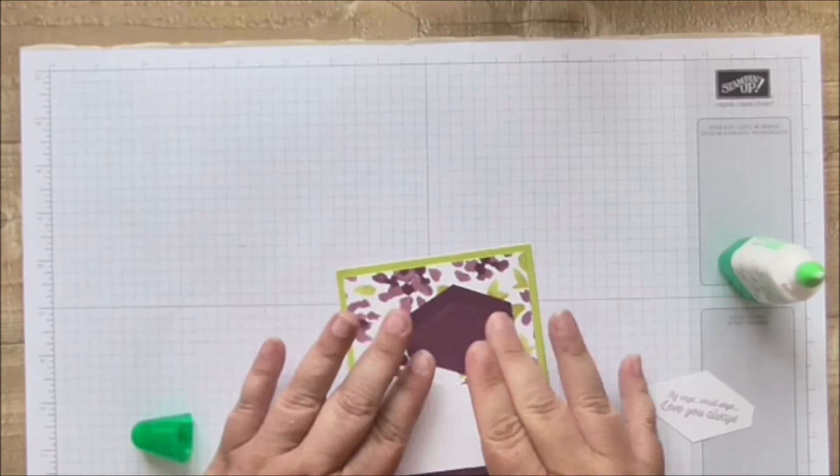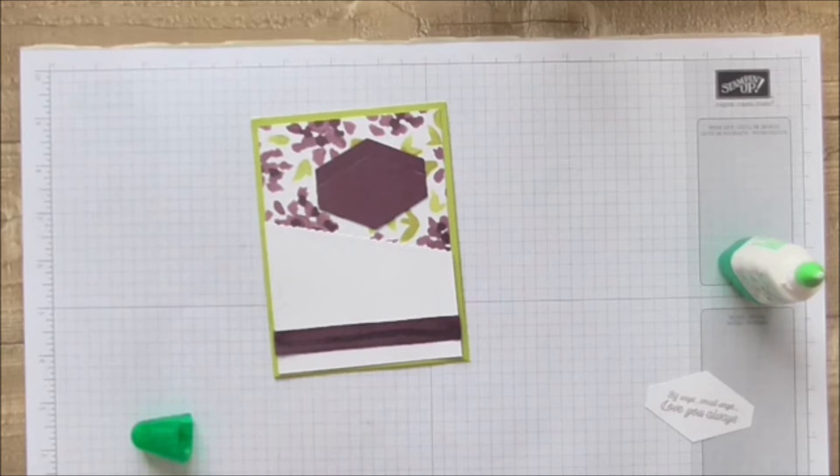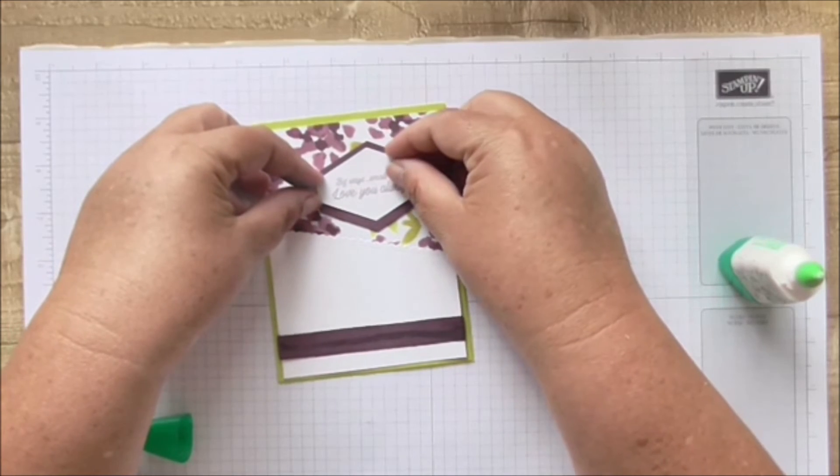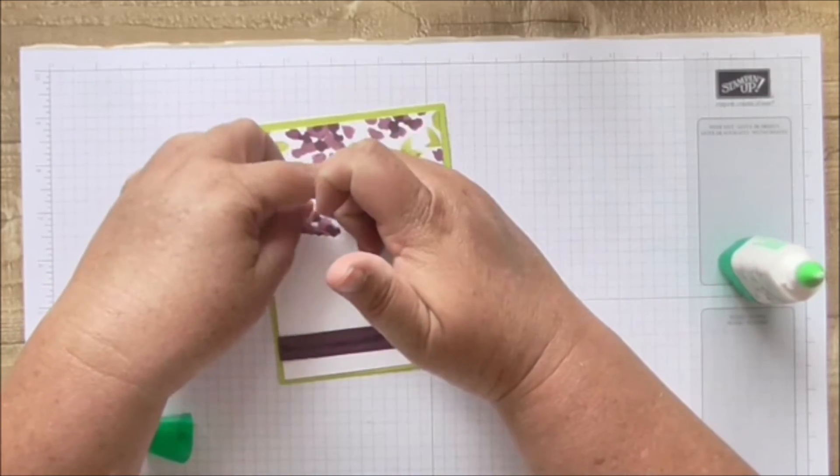And then I'm going to use dimensionals, and again when I'm doing the final versions I might end up changing from dimensionals to just sticking everything down because I'm going to have to make big quantities.